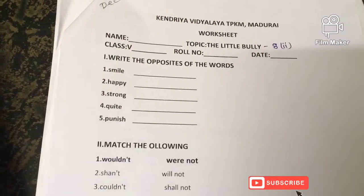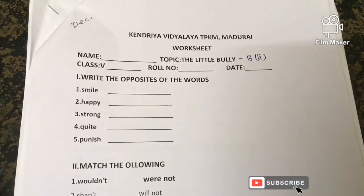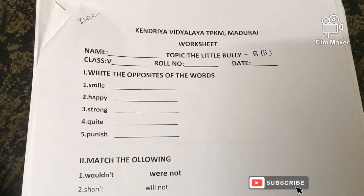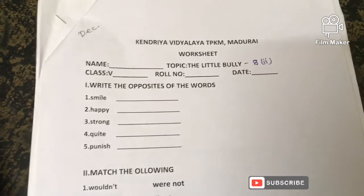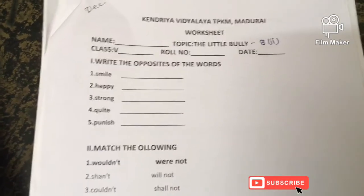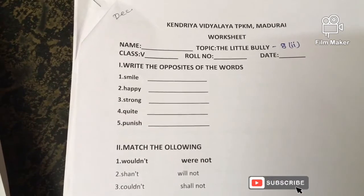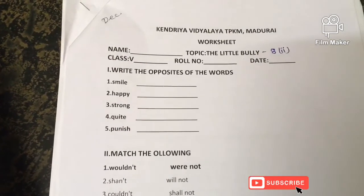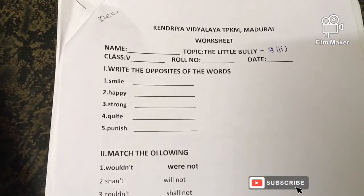Good morning, children. Today's worksheet is 'The Little Bully.' I will give you this worksheet to do at home, but now we will discuss a little here. Write the opposites of the words. Smile — opposite is cry.